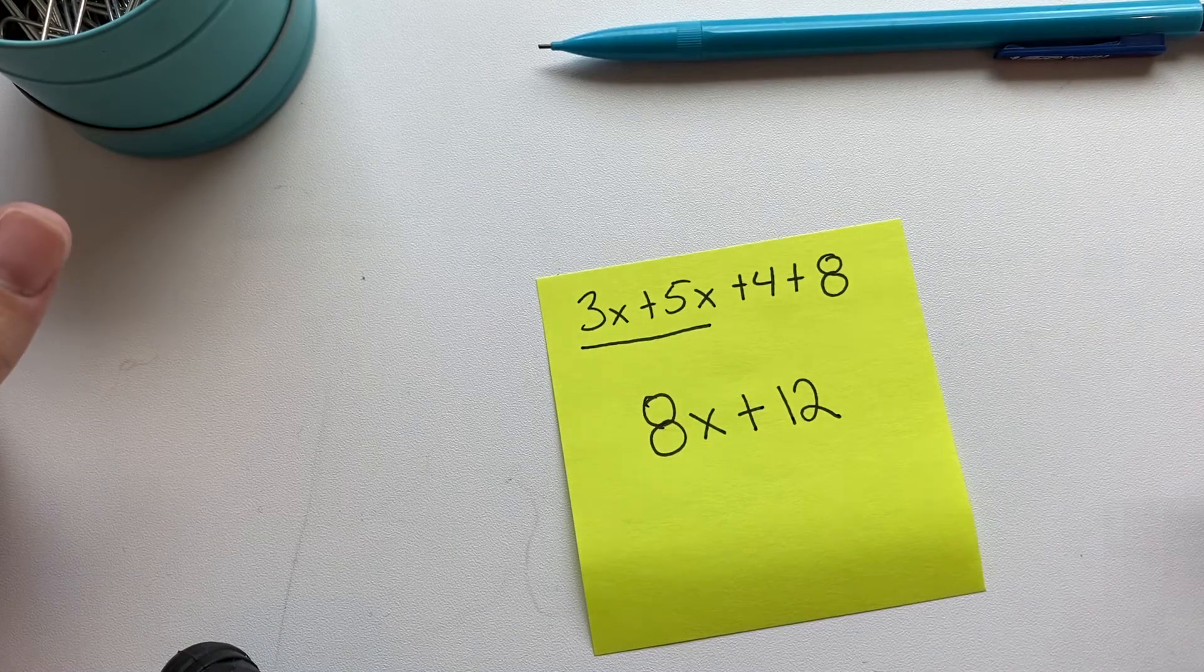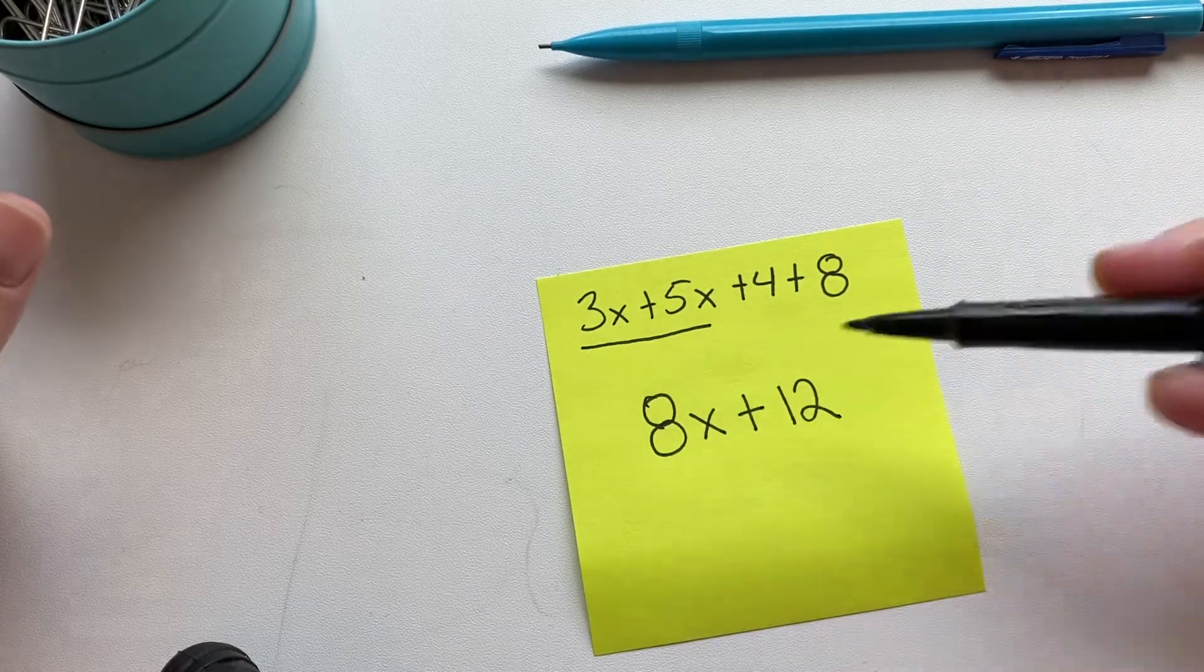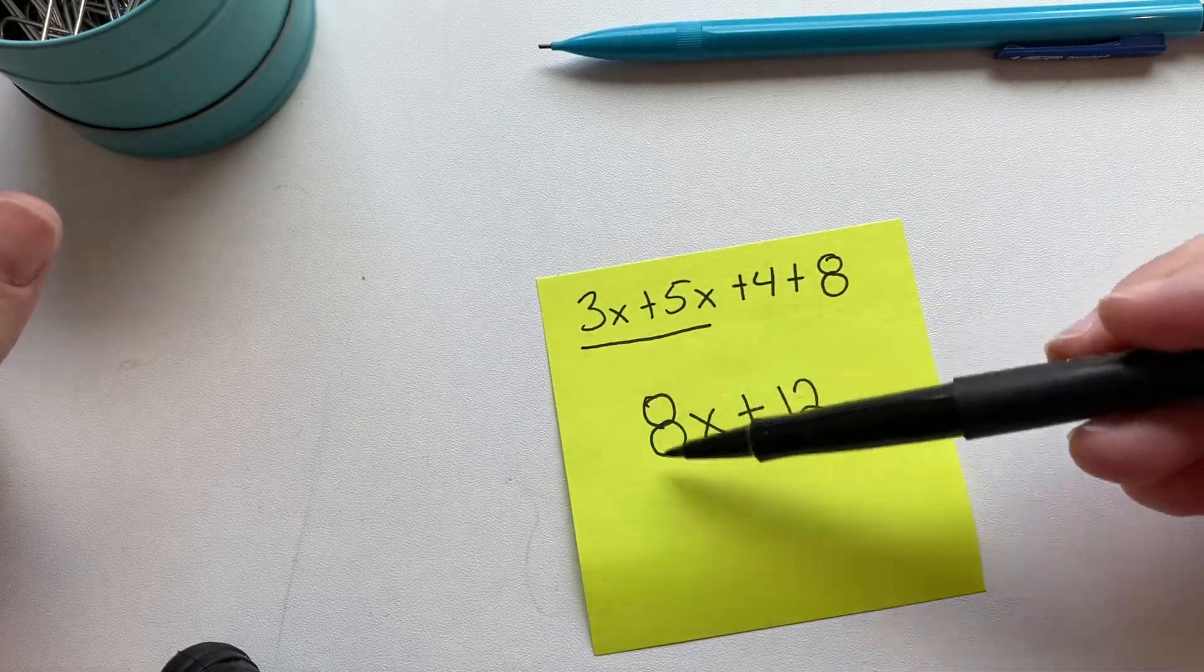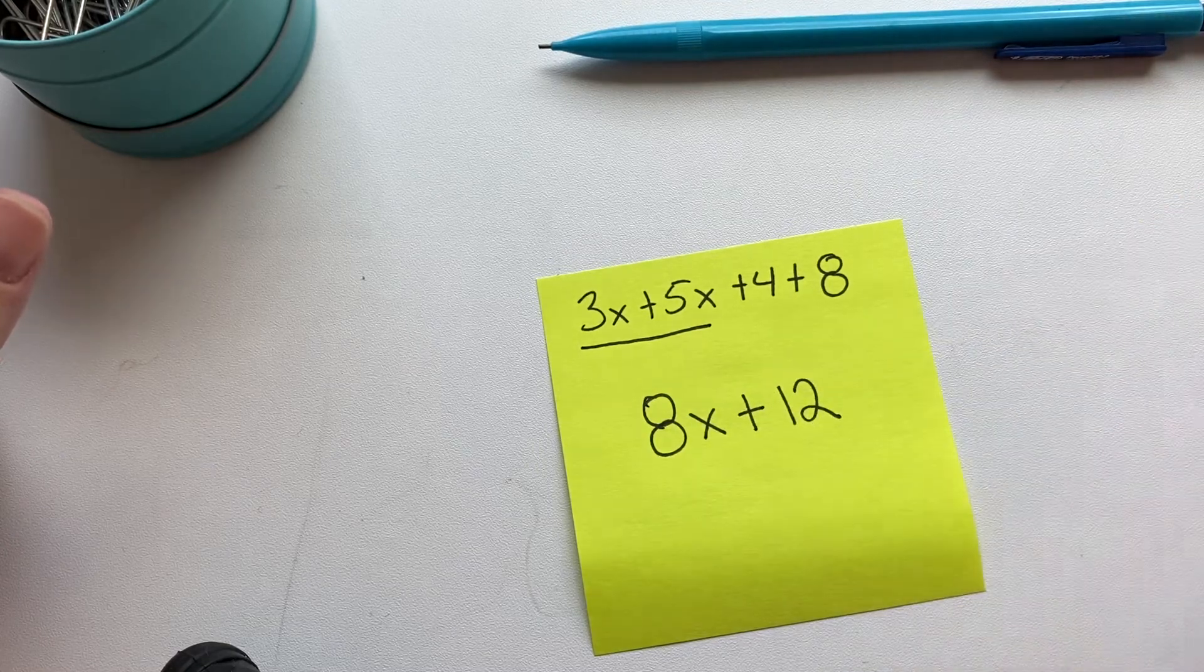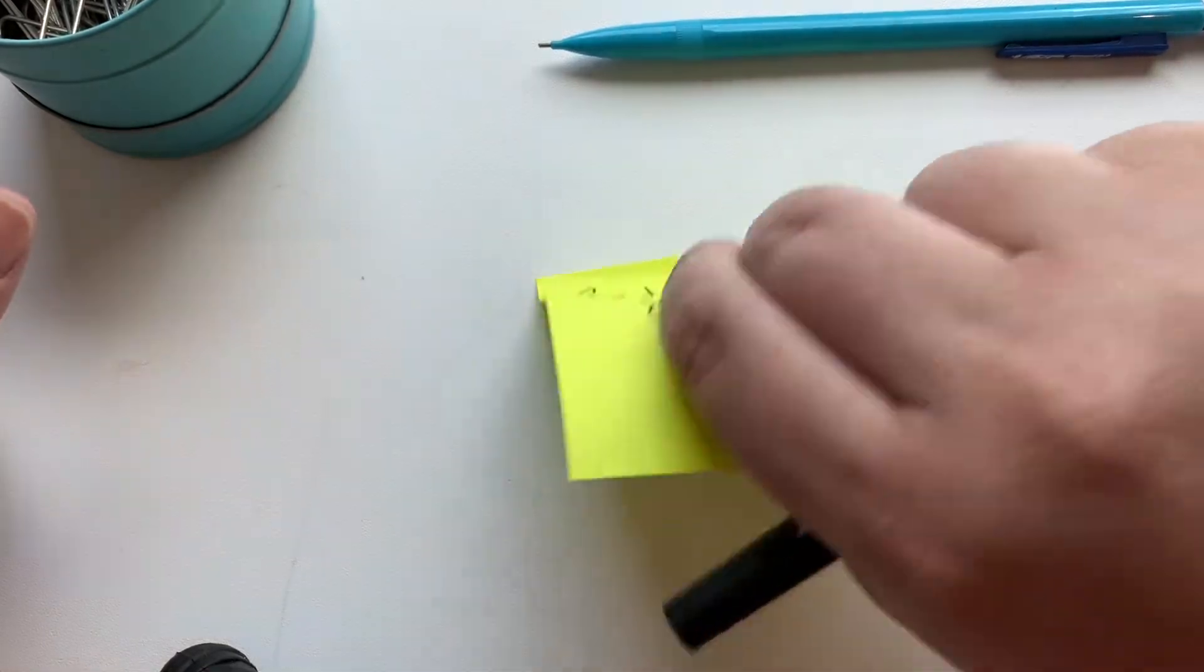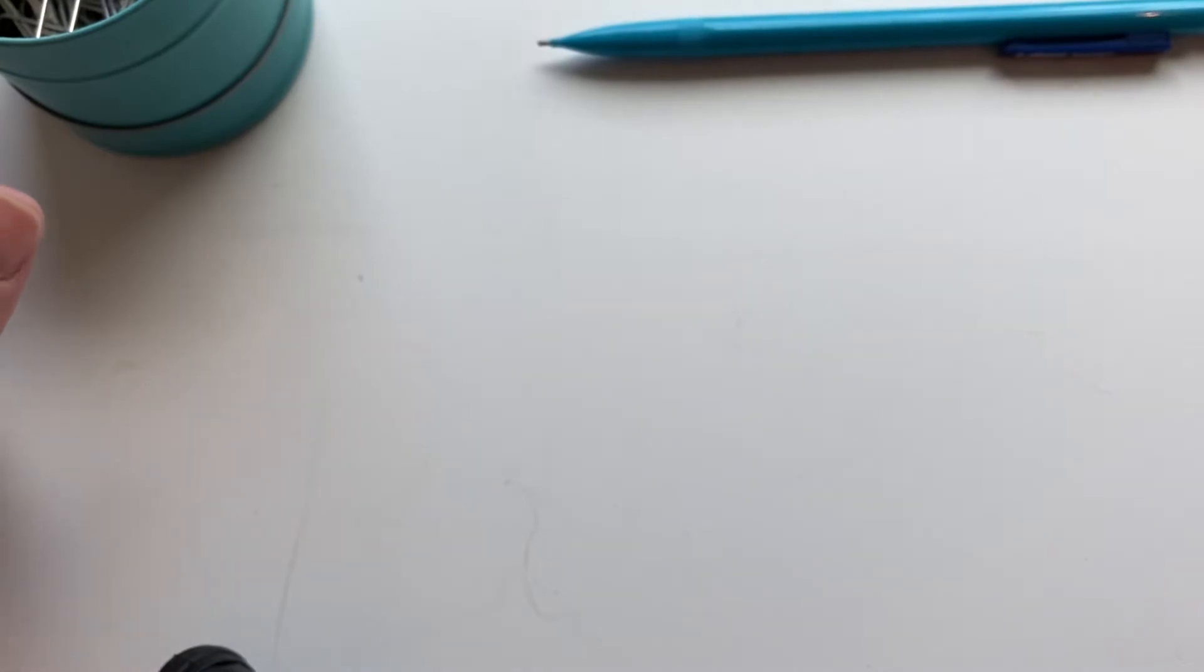You can't simplify any further because these are not the same terms as each other. This one has a variable x and this one is a constant. Okay, let's check out a couple more examples.